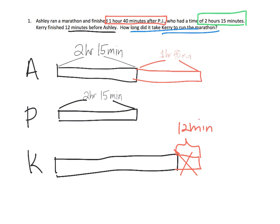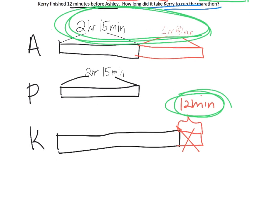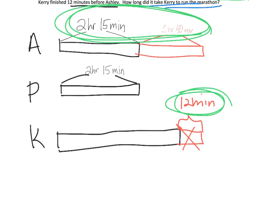So what's our process? We're going to begin by adding these two lengths up to get Ashley's time — 2 hours 15 minutes plus 1 hour 40 minutes. And then once we've got that time, we subtract 12 minutes, and that will give us our answer of how long it will take for Carrie to run the marathon.